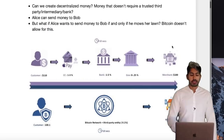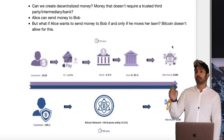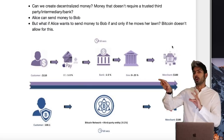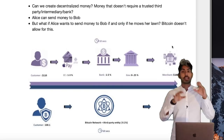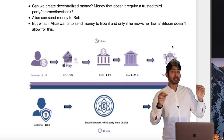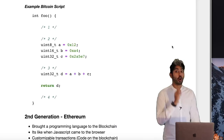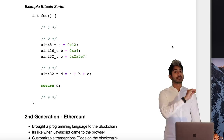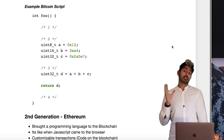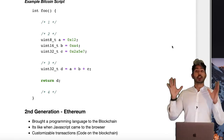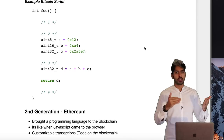But there's one thing that Bitcoin cannot do. What if Alice wants to send money to Bob only if Bob mows her lawn? You'd need a network that can communicate with the real world — some kind of lawn-mow API — where the transaction can tell if Bob mowed Alice's lawn, and only then release the funds. Bitcoin does not allow for this. A lot of people don't realize Bitcoin does have its own scripting language, but it's very limited — for security reasons mostly. For example, the Bitcoin scripting language does not allow for looping at all.